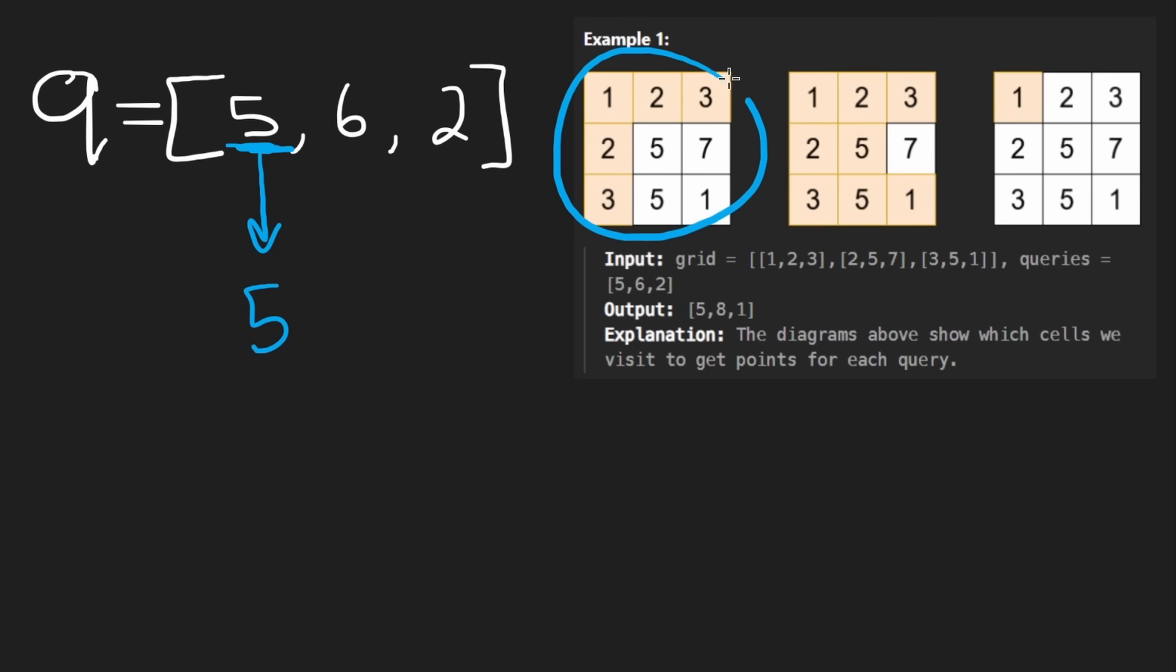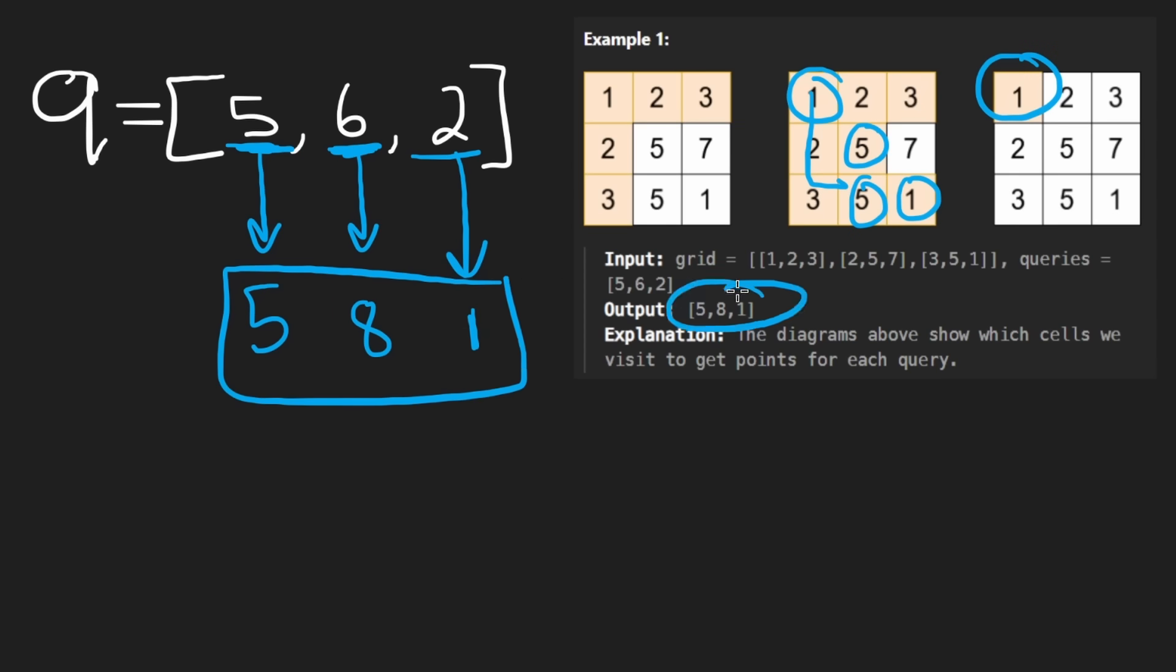And this picture does a good job of kind of showing which cells we're allowed to visit. Next query over here, six. We do the same thing, except it looks like we were able to visit a five and a five and a one by doing the traversal. And so that's like eight points that we would get. And the last query is two. So it looks like only the origin is visitable from there. So we only get one point. And then this would be the output, as you can see over here.